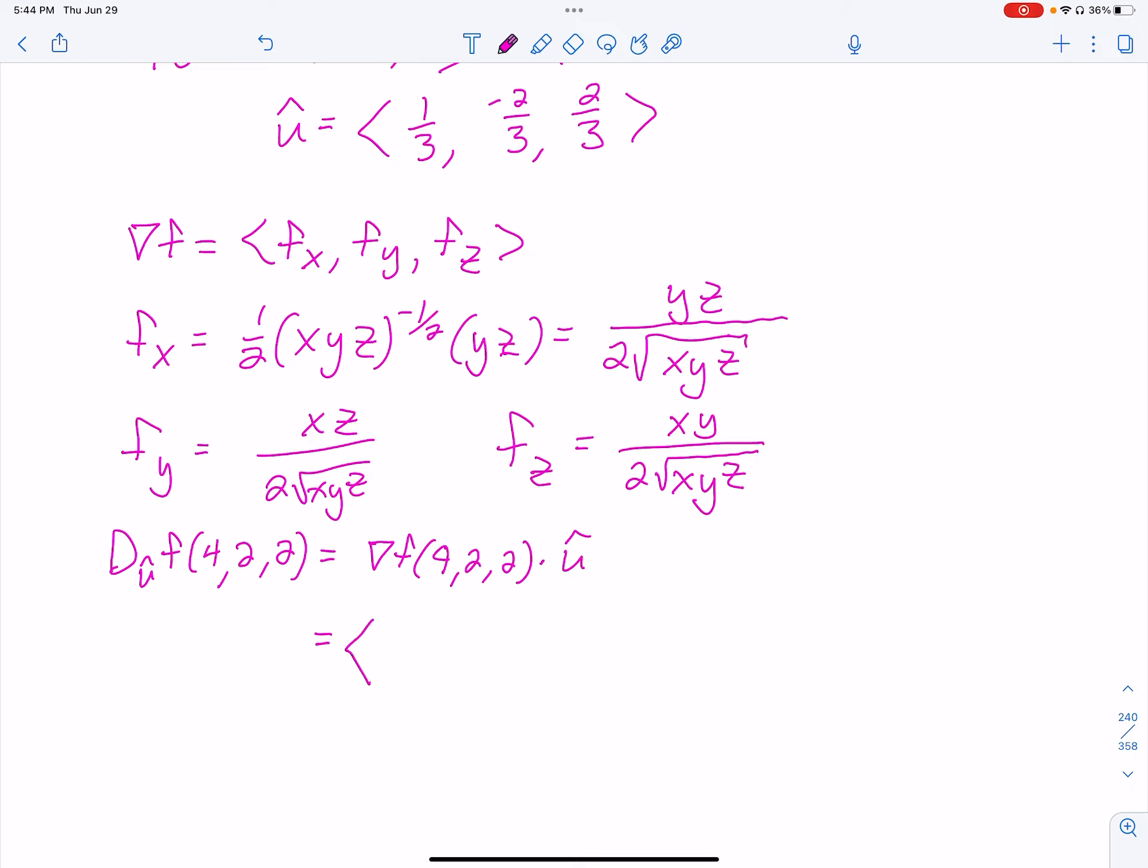Okay, I got four. The first one's yz, so it's going to be 4 over 2 times the square root of 4 times 2 times 2, which is 16. I'm just going to do that for a moment until I get everything. I got 8 over 2 times the square root of 16.